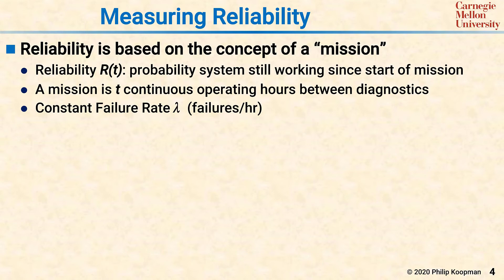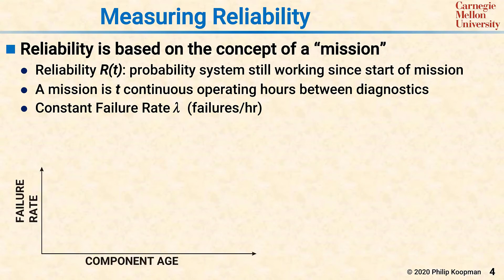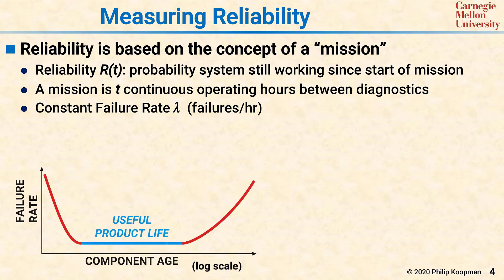An issue with lambda is that a constant failure rate is a bit of fiction. If we look at a graph of failure rate versus component age, often called a bathtub curve, we see that the constant failure rate is only true during the middle of the component life. At the beginning, components have a high failure rate due to manufacturing defects that pass tests but make the component wear out very quickly.